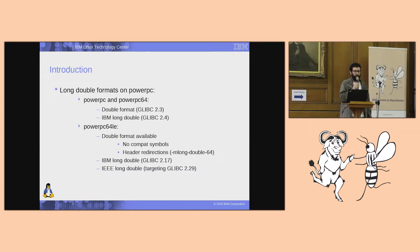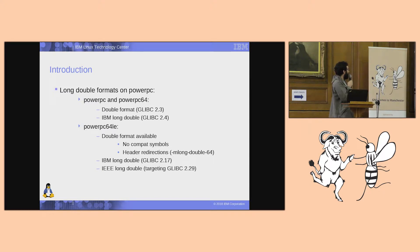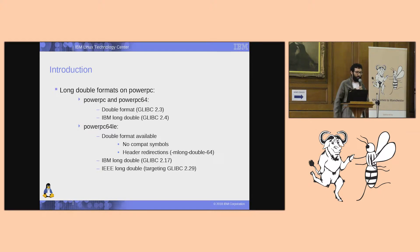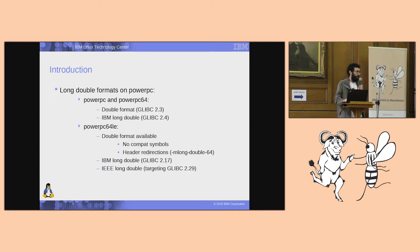How do you get this? You use header magic, which does redirections when trying to use long double with 64 bits. This is the version — 2.17 — when PowerPC little-endian was introduced. Right now the work we are doing targets the next version of Glibc, which is 2.29, and we are working on the transition to make long double have the IEEE long double format.